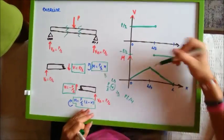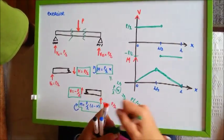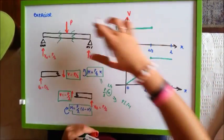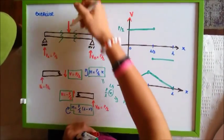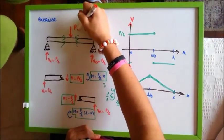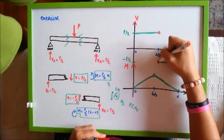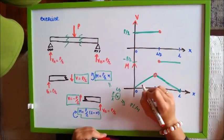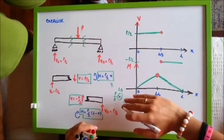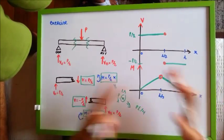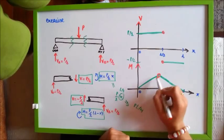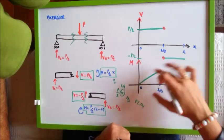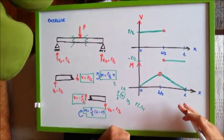So what does this mean? We can summarize that when we apply a concentrated charge at a point, we have a discontinuity in the shear stress, and we have an abrupt change in the slope of the bending moment line. It's clear that here there is a discontinuity, and here the slope changes suddenly.